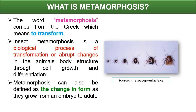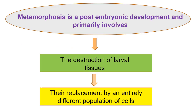What is metamorphosis? The word metamorphosis comes from the Greek word which means to transform. Thus, insect metamorphosis is a biological process of transformation or abrupt changes in the animal's body structure through cell growth and differentiation. Metamorphosis can also be defined as the change in form as they grow from an embryo to an adult. Metamorphosis is a post-embryonic development and primarily involves the destruction of the larval tissue and their replacement by an entirely different population of cells.